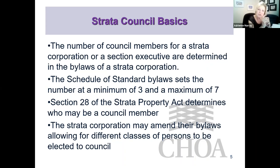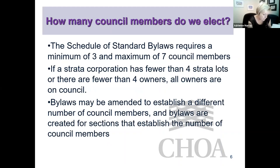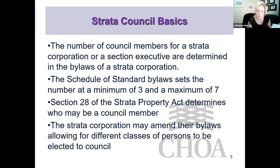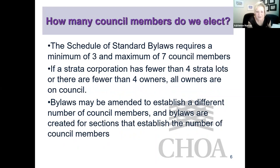How many council members do we elect? Three to seven under standard bylaws; if you have fewer than four lots or owners, then everyone's on council. You can always amend the bylaws to establish different numbers. Eligibility: the registered owner — those on title — are the people eligible. That's why to know for sure who your eligible voters are, you search the title. The title may have one name or many names; all registered owners are eligible to be on council.